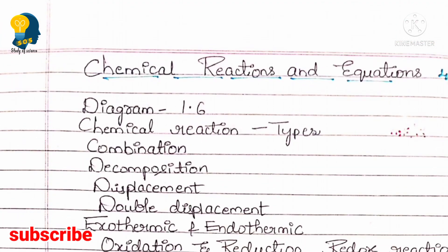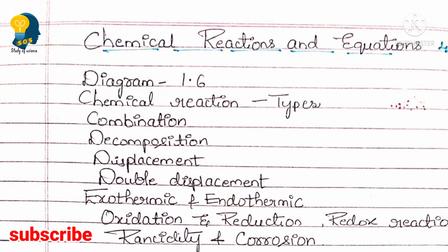Moving to Chemical Reactions and Equations. I completed the crash course for this lesson this morning — you can check my channel for that live session. In this lesson, focus on diagrams, which are very important. From Chemical Reactions and Equations, a total of 5 marks is allotted — either one 4-mark question plus one 1-mark question, or split differently. Diagram 1.6, electrolysis of water, is a must-learn.